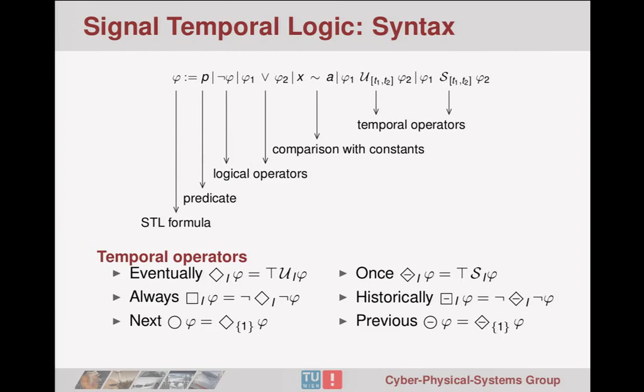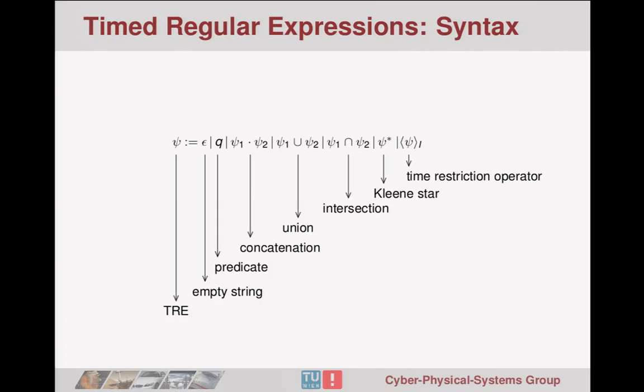We formalize the requirements. The first formalism we use is signal temporal logic, which allows reasoning about analog signals — there is a comparison of analog signals with real values in the logic, and temporal operators like future and past, from which one can derive other operators. The next formalism is time regular expressions, which we've just heard about. The key point is the time restriction operator, which allows interpreting the regular expression over a signal.